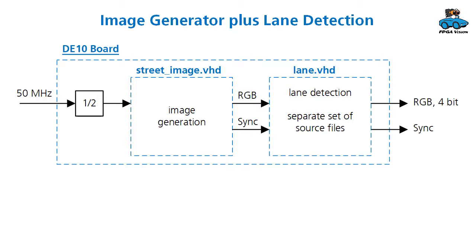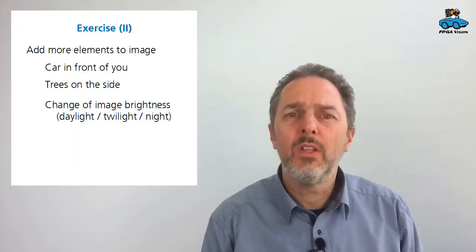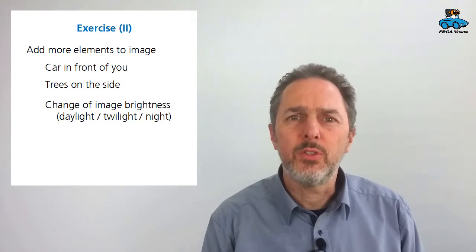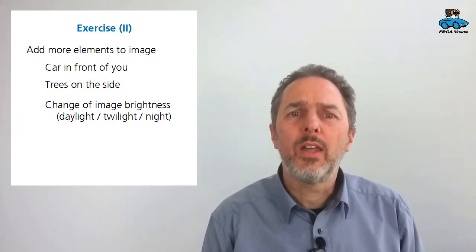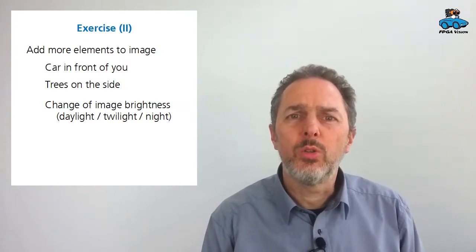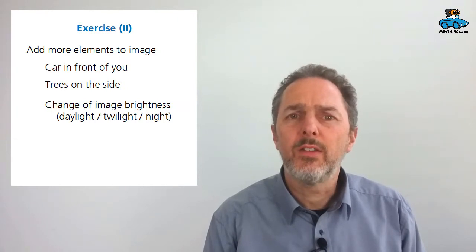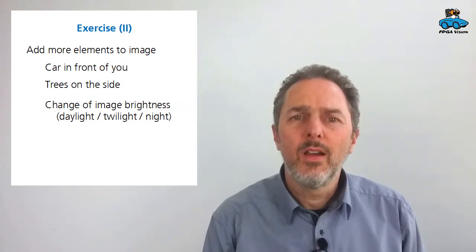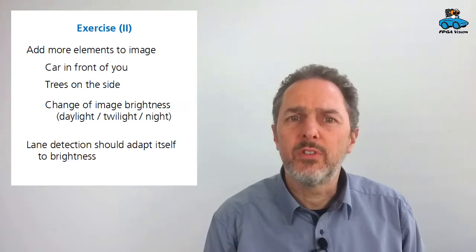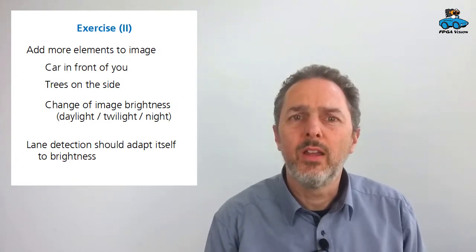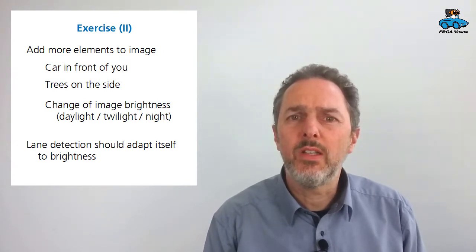This is the structure that you can implement. On the DE10 board you first have a module for the image generation, and then you have a module for lane detection. As a second experiment you can add functionality to the image generator. Maybe have a car that is driving in front of you. Or, very interesting, you can change the brightness of the image. You have switches on the board and you can change between daylight, twilight and night. Then also the lane detection should adapt to this different brightness. You can modify the lane detection so that, depending on the contrast in your image, the edges will still be detected.